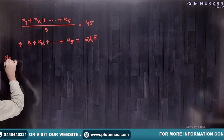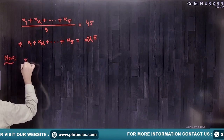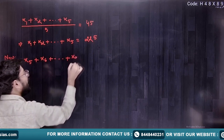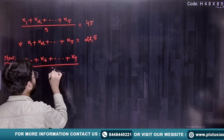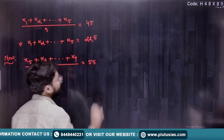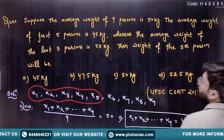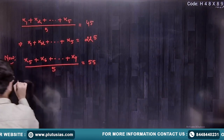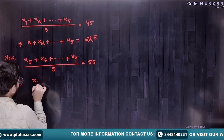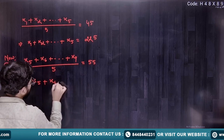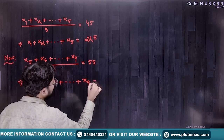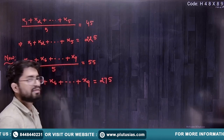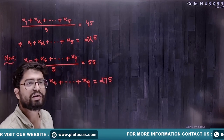For the last 5 persons — X5 plus X6 plus till X9 divided by 5 — their average weight is 55 kg. So X5 plus X6 plus till X9 equals 5 into 55, that is 275.